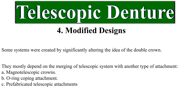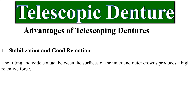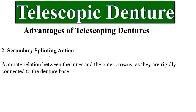Advantages of telescoping dentures: 1. Stabilization and good retention — the fitting and wide contact between the surfaces of the inner and outer crowns produces a high retentive force. 2. Secondary splinting action — accurate relation between the inner and outer crowns, as they are rigidly connected to the denture base. 3. Transferring occlusal forces through the long axes of abutments — telescopic crowns surround abutments, so occlusal forces are transmitted through their long axes. 4. Establishing a common insertion path — the inner crown's parallelism makes this possible even when abutments are slanted.